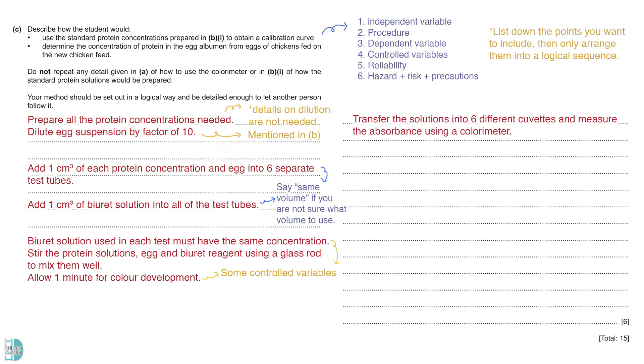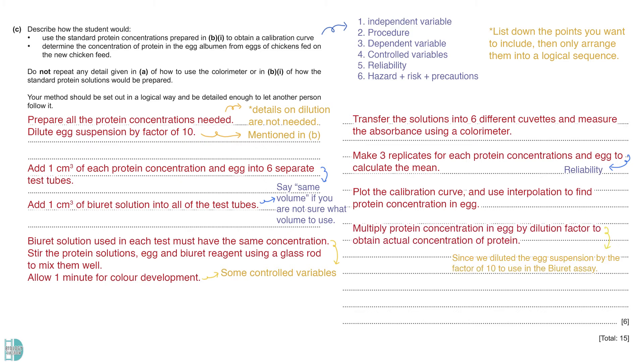Transfer the solutions into 6 different cuvettes and measure the absorbance using a colorimeter. To increase the reliability, make 3 replicates for each protein concentration and egg to calculate the mean. Once we have all the results, plot the calibration curve and use interpolation to find protein concentration in egg. Remember to multiply protein concentration in the egg by the dilution factor to obtain the actual concentration of protein as we diluted it just now to use for the test.